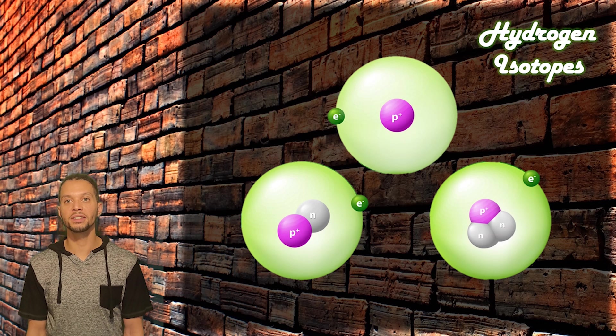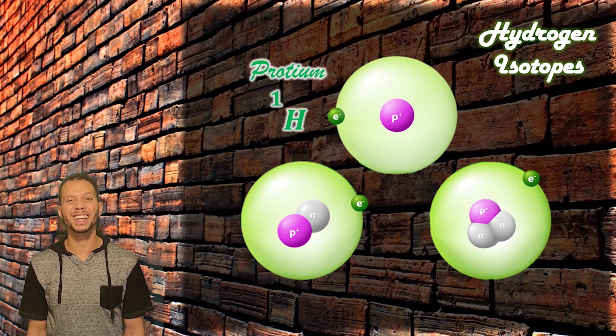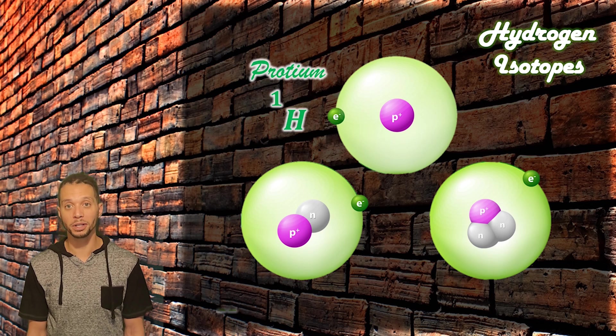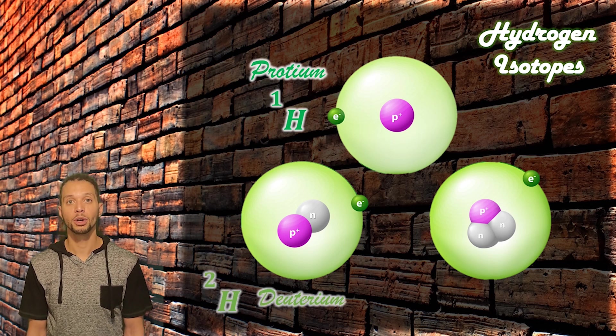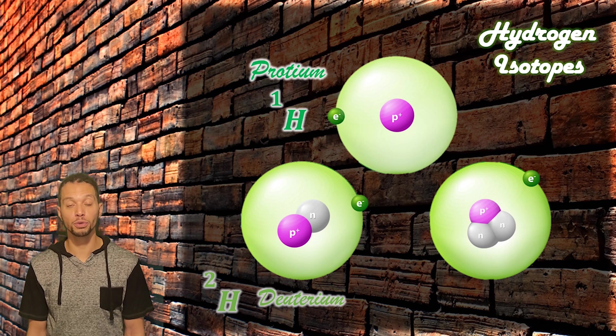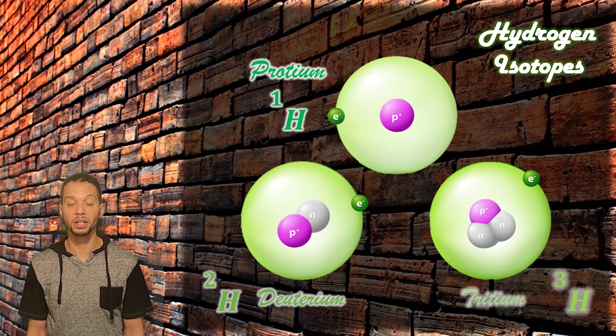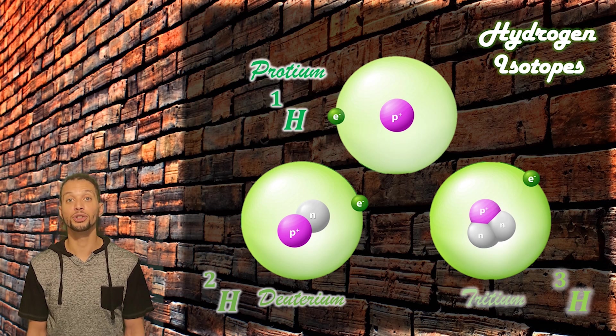Hydrogen exists as protium, with that single proton and no neutrons, giving it a mass number of 1; deuterium, with a mass number of 2 from 1 proton and 1 neutron; and tritium, with a mass number of 3 from 1 proton and 2 neutrons.